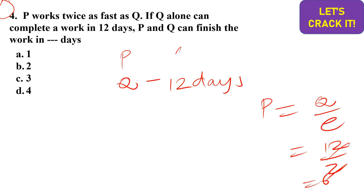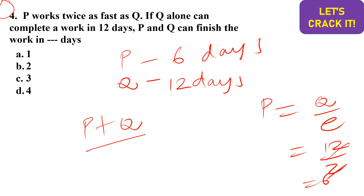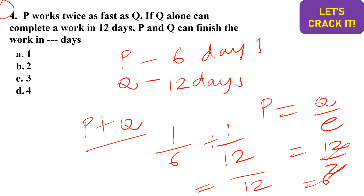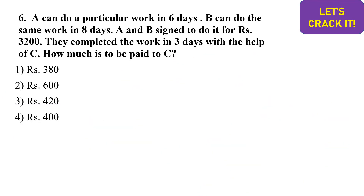If a person is more efficient, they take fewer days to complete the work. With both P and Q working together, their combined rate is 1/6 + 1/12 = 3/12 = 1/4. So together they complete the work in 4 days.